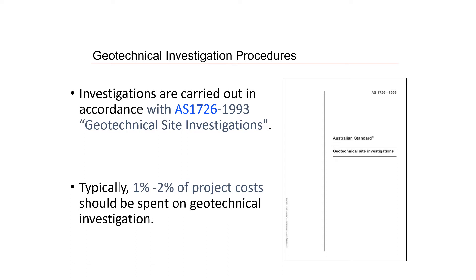To do site investigation we need to follow a standard, and in Australia it is AS 1726. It's a very important document that describes what type of site investigation needs to be conducted. Typically for large projects we spend about one or two percent of the project cost on site investigation.